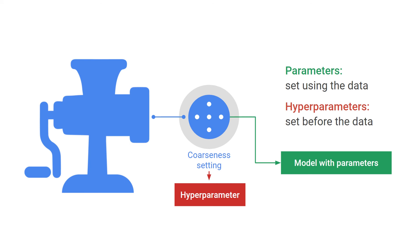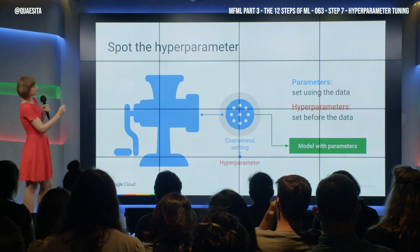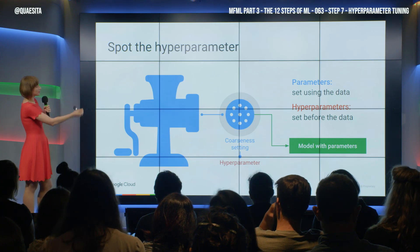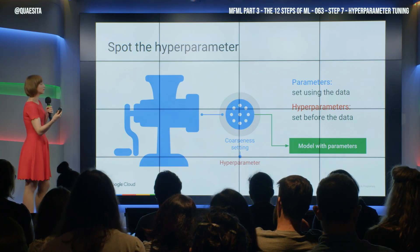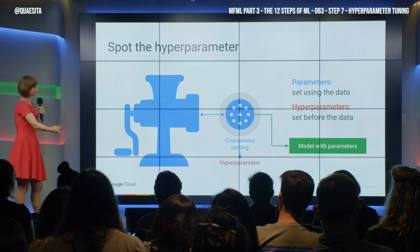That's how tuning hyperparameters works in practice. You can almost think of every different hyperparameter setting as essentially a different algorithm. It just makes your head spin to think about how many different algorithms you're effectively trying if you have a continuous hyperparameter. The parameters depend on your data; the hyperparameters, you have to pick them before you can even begin.